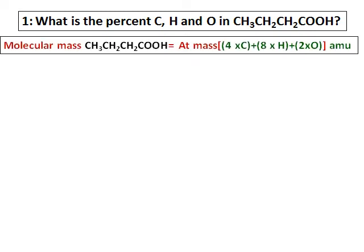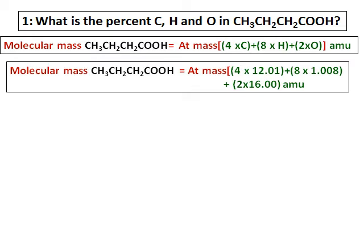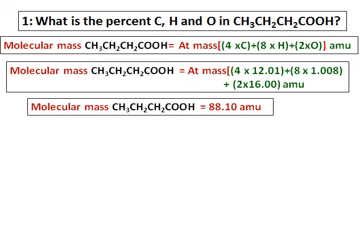Let's do the first question: what is the percent of carbon, hydrogen, and oxygen in CH3CH2CH2COOH? The first thing we will do is calculate the molecular mass. Get the atomic masses of carbon, hydrogen, and oxygen from the periodic table and calculate the molecular mass.